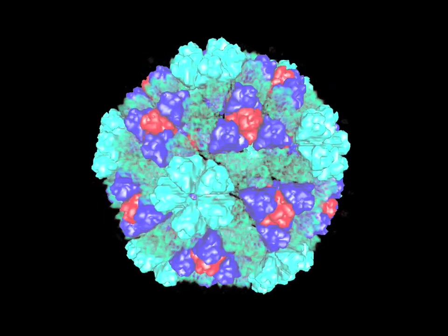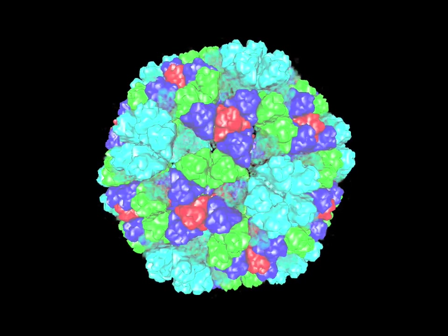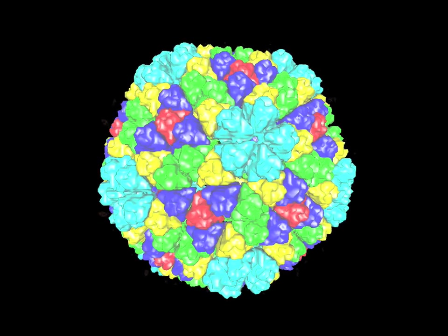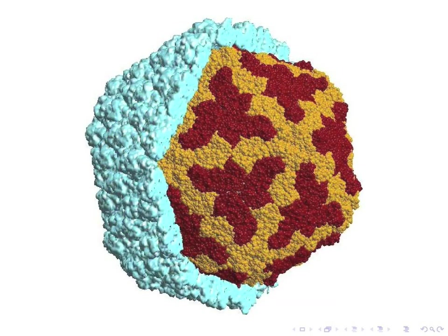For example, the rice dwarf virus shown here is one of the most economically damaging infectious parasites of rice and wheat, causing discoloration at the site of infection and stunting plant bodies.